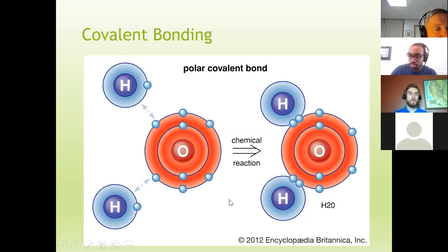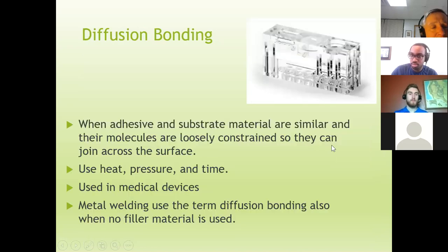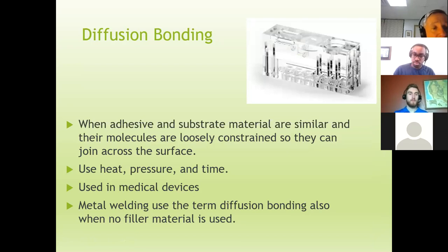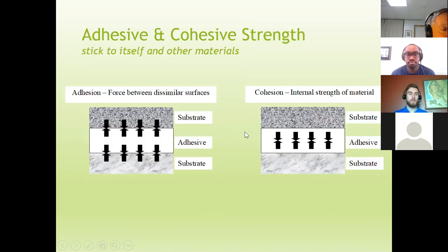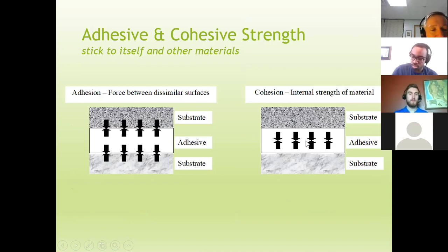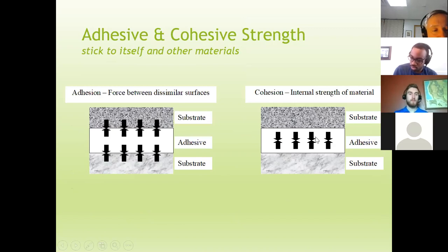Here is a visual example of diffusion bonding — not using a separate adhesive but using pressure and temperature to cause molecules to diffuse through the layer. Not really an issue in model building. Two important terms: adhesion is the stickiness of the adhesive to the substrate, and cohesion is the internal strength. Often adhesion is the bigger problem requiring surface preparation, while cohesion is the final strength.